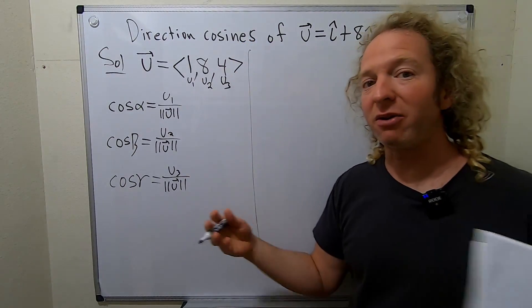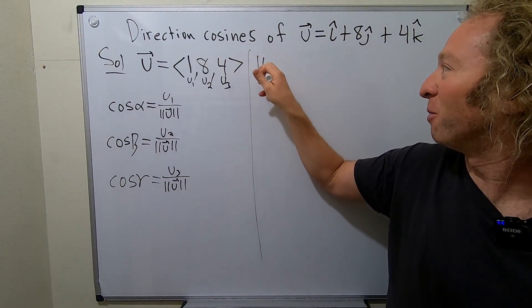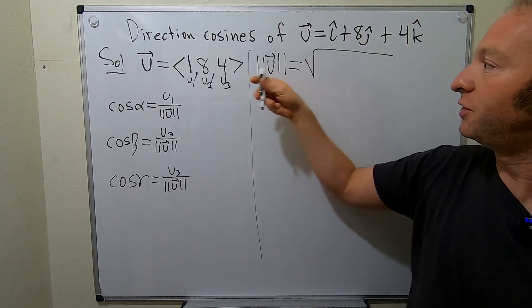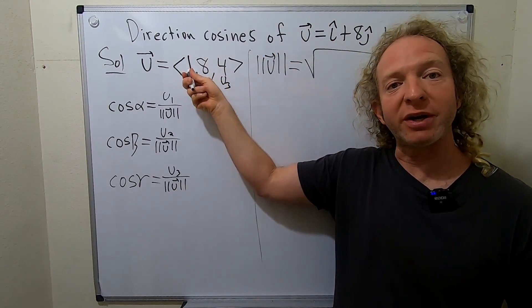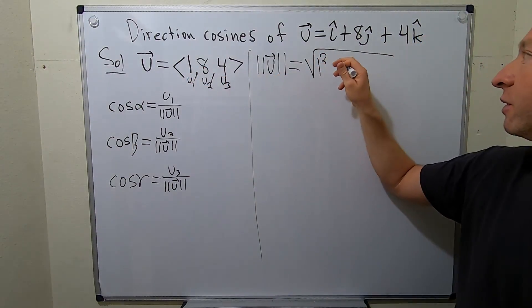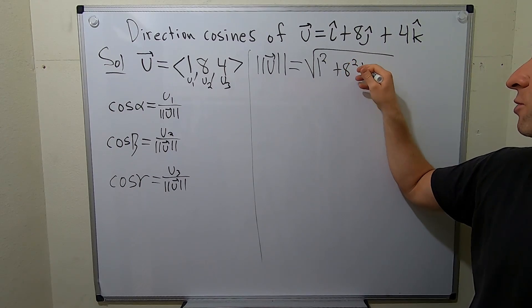I haven't done this before. I don't have a calculator with me, so lots of fun. So, magnitude of u, square root, let's see, the square root of the components. So, 1 squared, I'll write 1 squared, plus 8 squared, plus 4 squared.